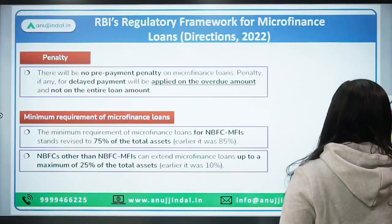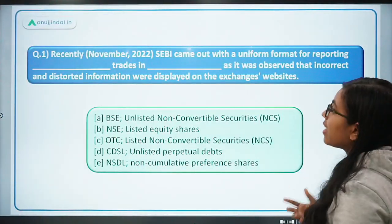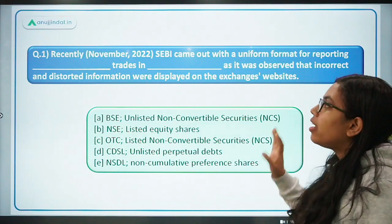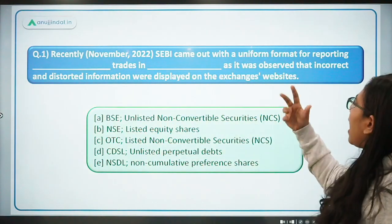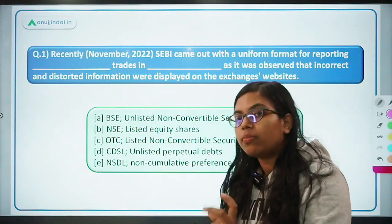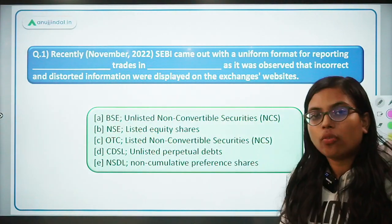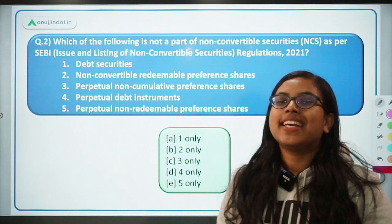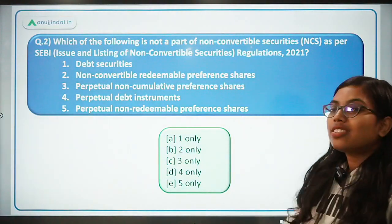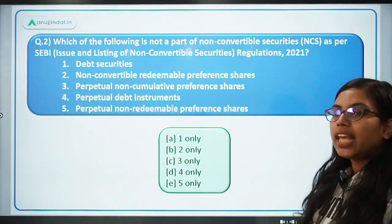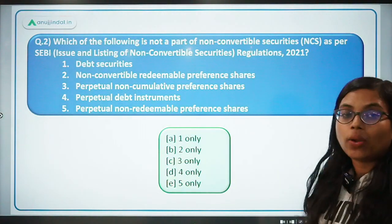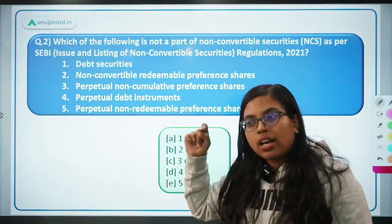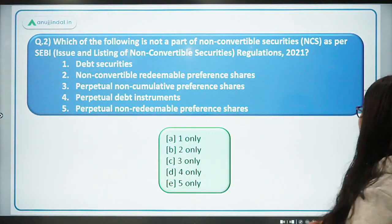The first question says: recently in the month of November, SEBI has come up with a uniform format for reporting blank trades in blank, as it was observed that incorrect and distorted information were displayed on the exchange's website. The second question says: which of the following is not a part of non-convertible securities as per SEBI regulation of 2021? Answer it in the comment section.